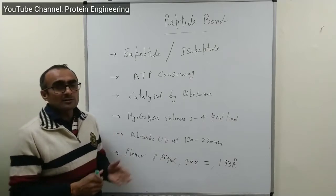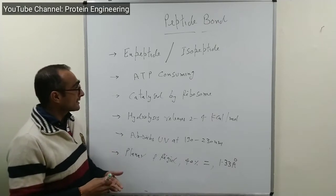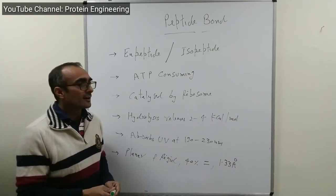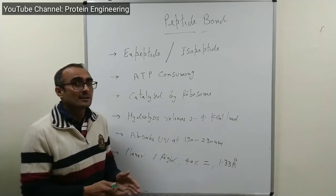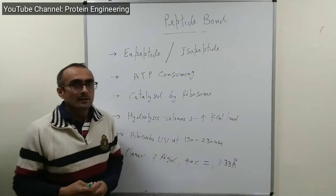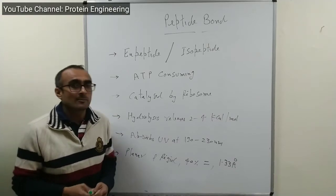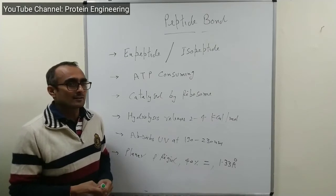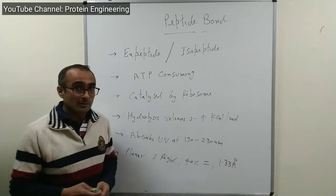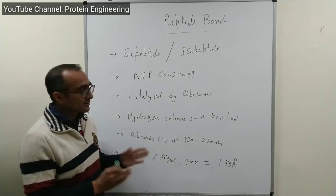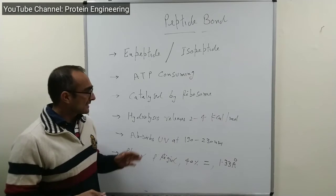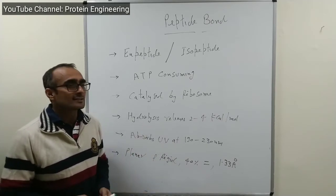The formation of a peptide bond is ATP-consuming and is catalyzed by the ribosome during translation, where DNA is transcribed into messenger RNA and the mRNA is translated into a protein sequence. Hydrolysis of the peptide bond can also occur spontaneously, but it is a very slow process — uncatalyzed hydrolysis requires more than 300 years to break down a peptide bond in the presence of water. This process can be made very rapid in the presence of catalysts — proteins that catalyze the breakdown of peptide bonds are called peptidases, proteases, or proteinases.